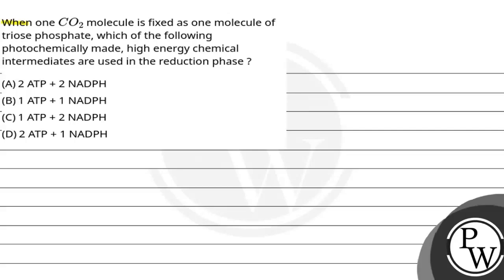Let's read this question. The question says: when one CO2 molecule is fixed as one molecule of triose phosphate, which of the following high-energy chemical intermediates are used in the reduction phase? Question में पूछा है कि जब एक CO2 molecule fix करेंगे और एक molecule triose phosphate बनेगा, तो कौन सी high-energy chemical intermediates use होंगी? Options: 1st: 2 ATP and 2 NADPH; 2nd: 1 ATP and 1 NADPH; 3rd: 1 ATP and 2 NADPH; 4th: 2 ATP and 1 NADPH.